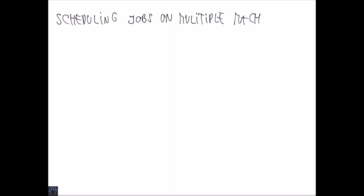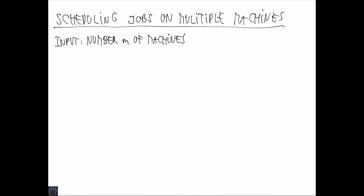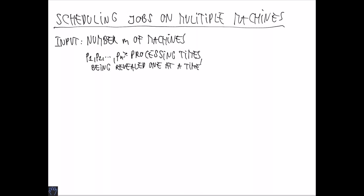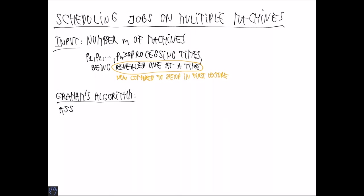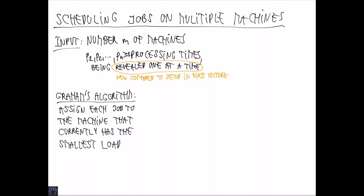We recall the problem of scheduling jobs on multiple machines. The input consists of a number M, the number of machines, and a sequence P1 through PN of processing times. In the online version, these are revealed one at a time and are all non-negative. This is the new thing compared to the setup seen in the first lecture. Graham's algorithm — different from the local search algorithm seen before — is a simple greedy algorithm that assigns each job to the machine that currently has the smallest load. If there are ties, they can be broken arbitrarily.